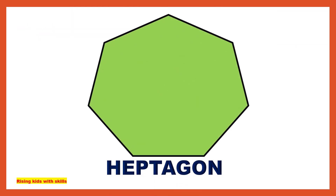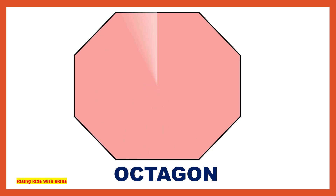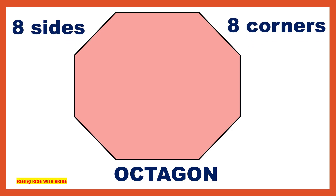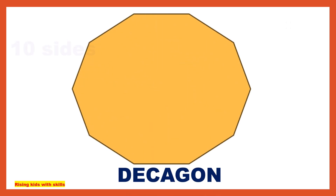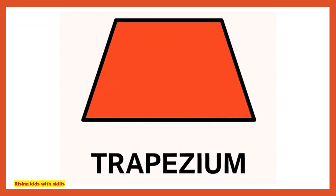This is called a hexagon. It has six sides and six corners. This is called a heptagon. It has seven sides and seven corners. This is called an octagon. It has eight sides and eight corners — it is like a stop sign.